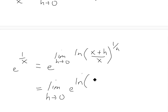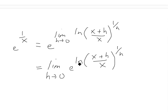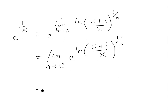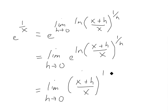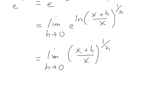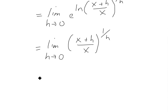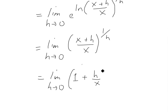This gives us the limit as h approaches 0 of e to the ln of x plus h divided by x, to the power of 1 over h. Since e to the ln is a natural log with base e, these cancel out. We're left with the limit as h approaches 0 of x plus h divided by x, to the power of 1 over h. Dividing x into the numerator and denominator gives 1 plus h over x, to the power of 1 over h.